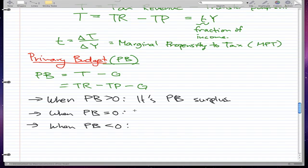When PB equals 0, this becomes very intuitive - it's a balanced PB.